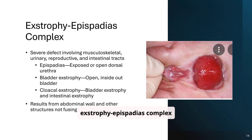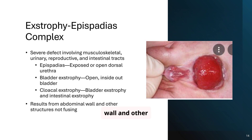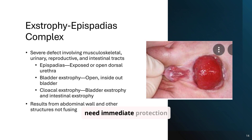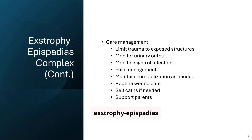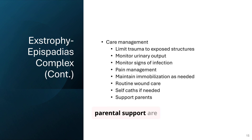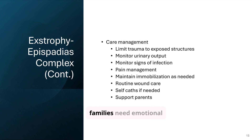The exstrophy-epispadias complex is a severe birth defect involving multiple systems, resulting from incomplete fusion of the abdominal wall and other structures. This complex condition requires a multidisciplinary approach — the bladder may be on the outside of the body. These babies need immediate protection of exposed organs and a specialized team to surgically rebuild the bladder and pelvic area over time. Care management focuses on protecting exposed structures, monitoring urinary output, and managing pain. Use sterile, non-adherent dressings to keep tissues moist and prevent infection. Monitor output with diapers or catheter, and provide emotional support to families.